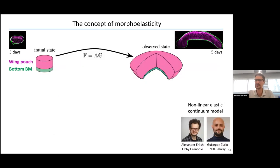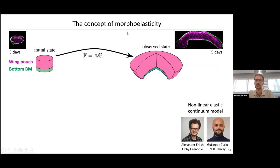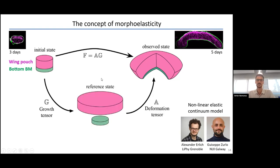To get conceptual insight, I teamed up with Alexander Ehrlich in Grenoble and Giuseppe Pizzolo in Ireland — both theorists who created a nonlinear elastic continuum model based on the concept of morphoelasticity. Morphoelasticity suggests that an initial state — a small ungrown wing disc at three days — is transformed into the observed state after five days, a domed wing disc. This growth process can be decomposed into a growth component described by a growth tensor and a deformation component.